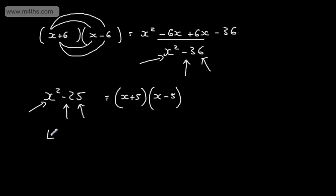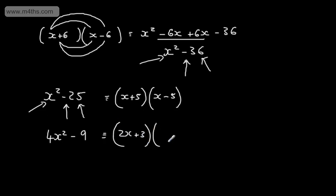Let's look at another one: 4x squared minus 9. 4x squared is a square number, 9 is a square number, and we have the difference. So we can write this as 2x plus 3 multiplied by 2x minus 3. Just consider, if we had 2x and we squared that, we'd have 4x squared. So the expression 4x squared minus 9 can be factored as the difference of squares as 2x plus 3 and 2x minus 3.